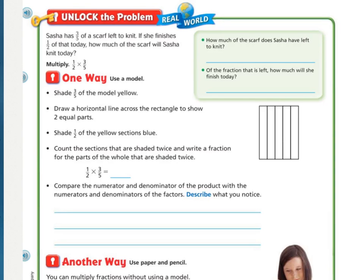Unlock the problem. Sasha has three-fifths of a scarf left to knit. If she finishes half of that today, how much of the scarf will Sasha knit today? Underline what you're being asked to find and circle the important information.